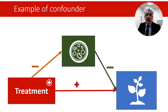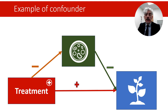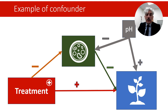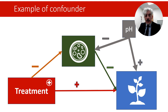I will work again with the example from the previous presentation: a treatment applied to soil to promote successful growth of plants. The treatment may work partly because it effectively eliminates fungi and other organisms that hinder plant growth. However, there are possible confounders — for example, the pH or acidity of the soil — which can negatively influence fungi while also being optimal for plants. This is a fictional example, but such confounders are possible.